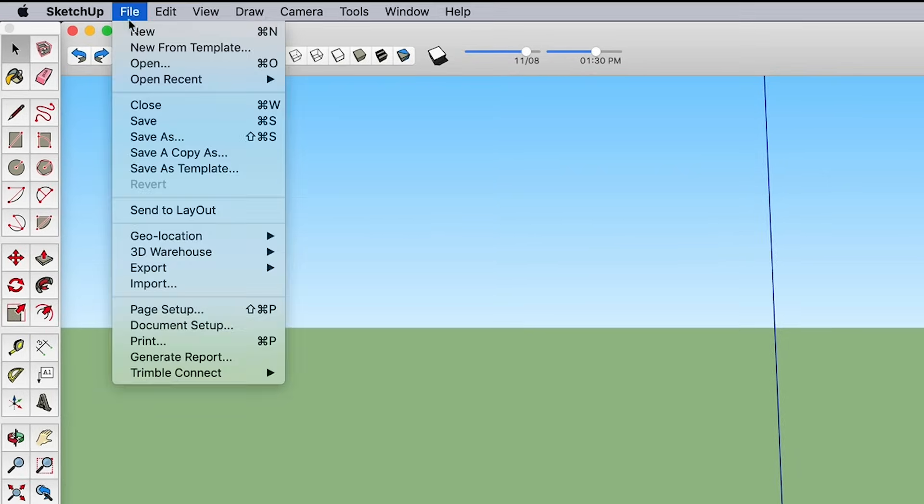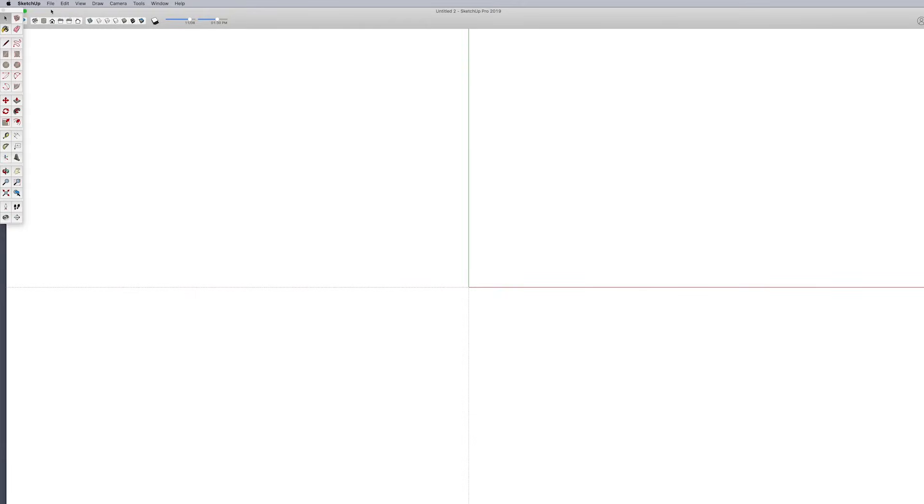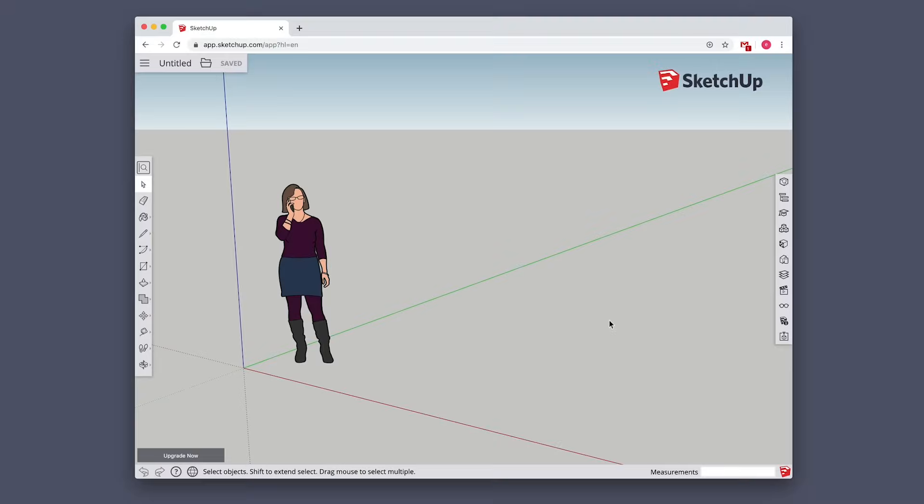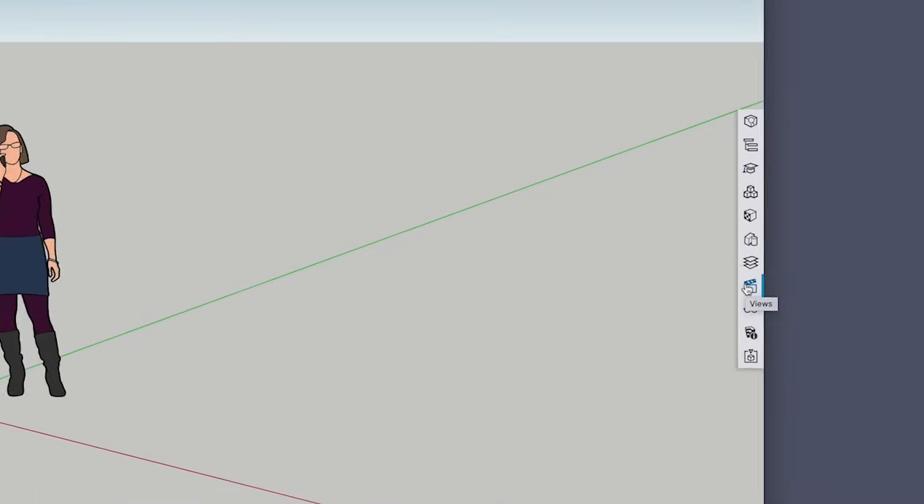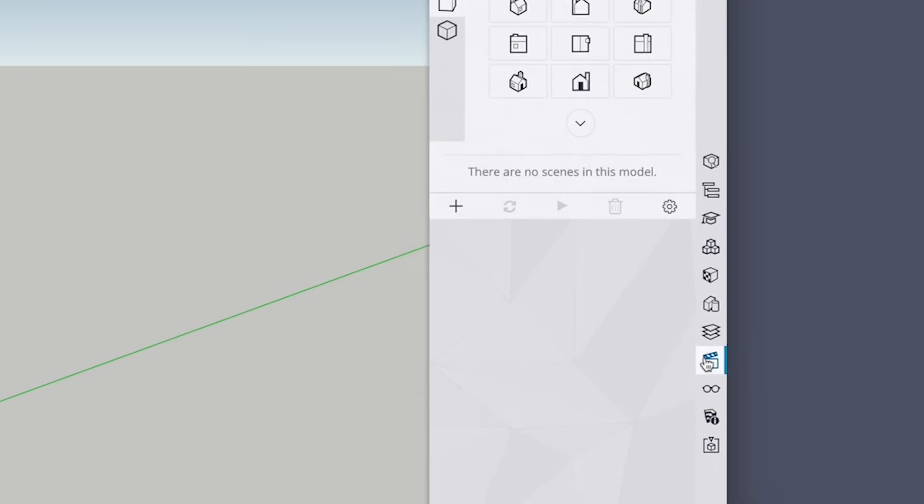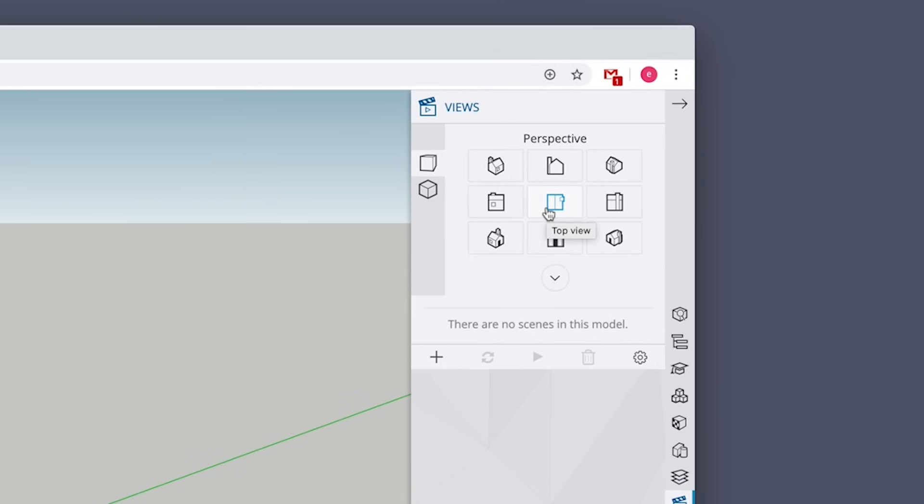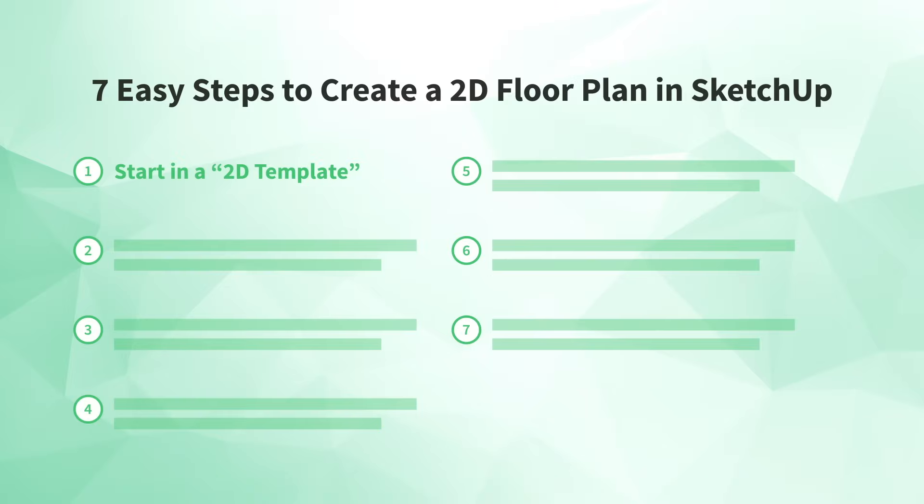Now your current files template won't change, but when you start a new file, you'll start in the new template. If you're using the free, web-based version of SketchUp, you won't have access to the template you need. But you can get pretty close by switching to a top view from the Views menu. Now that you're in a plan view, the next step is number two, draw your floor.